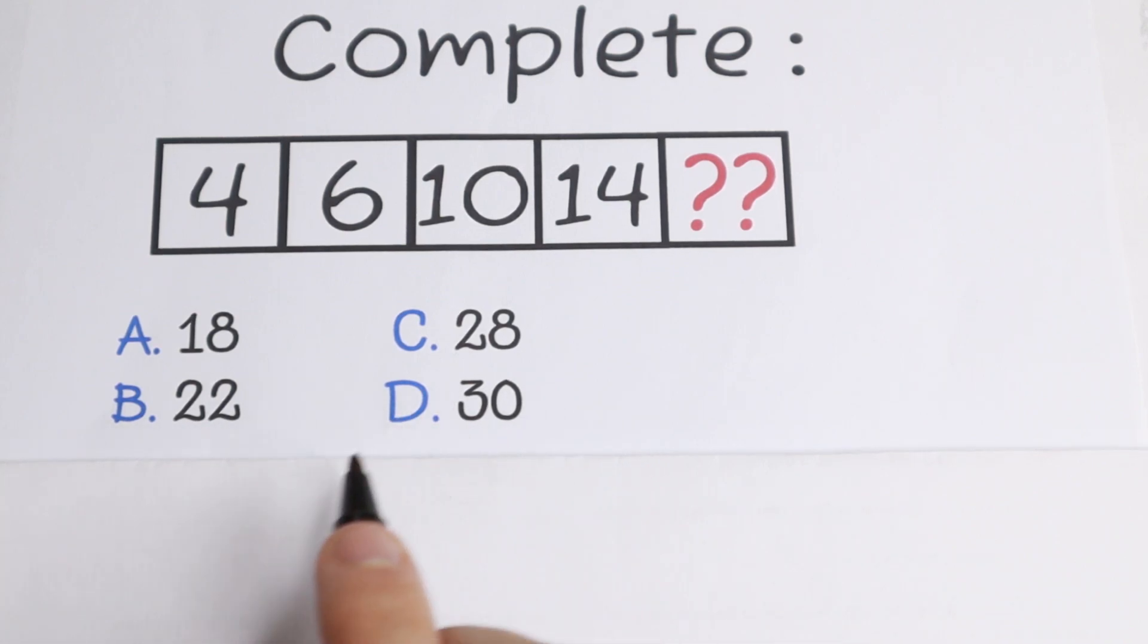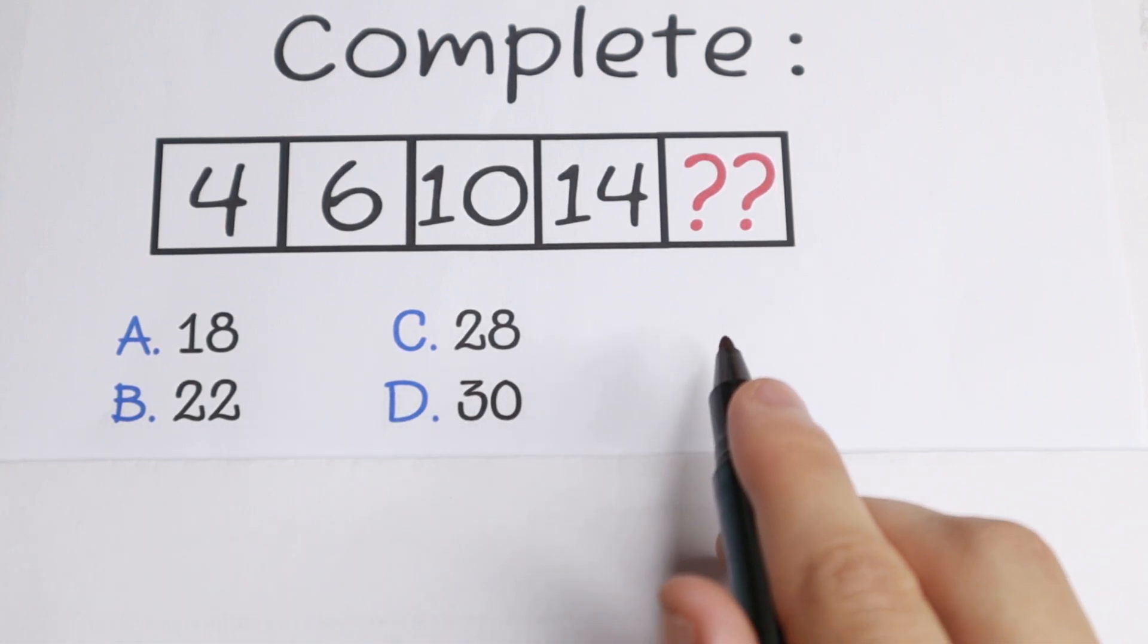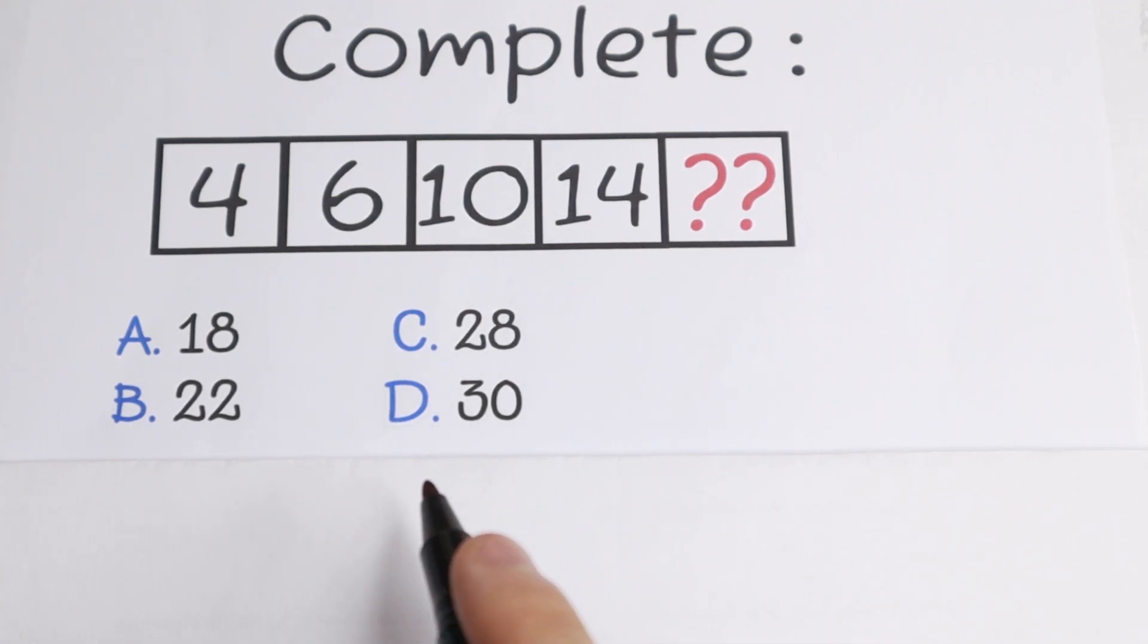We have a numeric series. We have 4, 6, 10, 14, and we have the last number that we need to find. But what is the pattern between all these numbers?